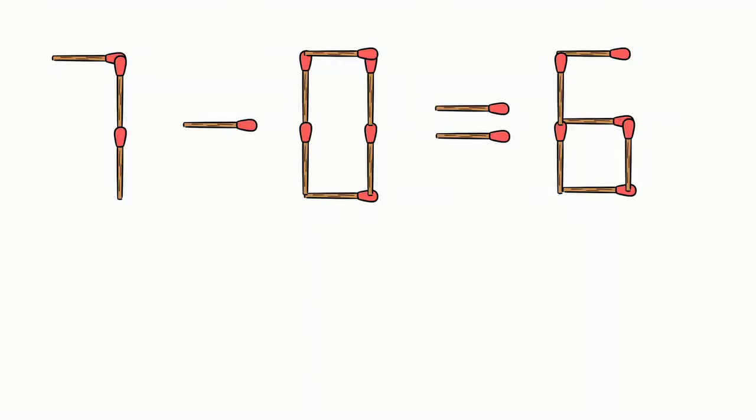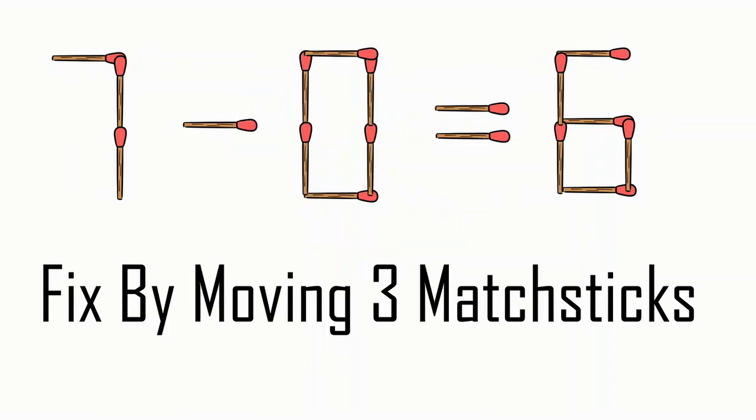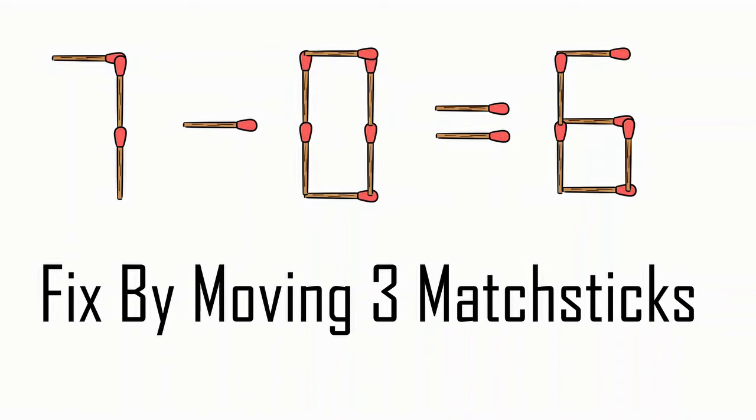So you see the problem in front of you: 7 minus 0 equals 6. This is completely wrong. You need to fix this by moving three matchsticks. Best of luck, you have 10 seconds.